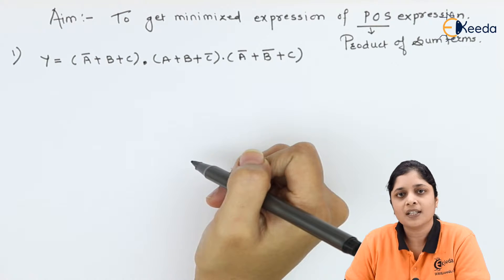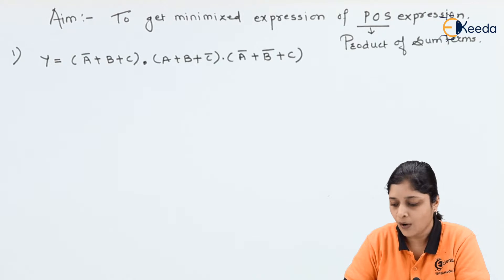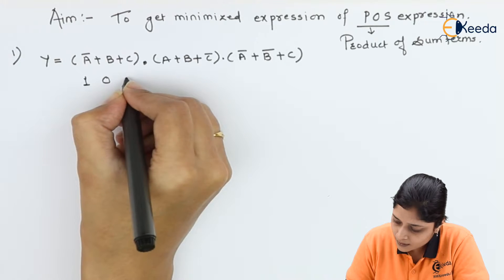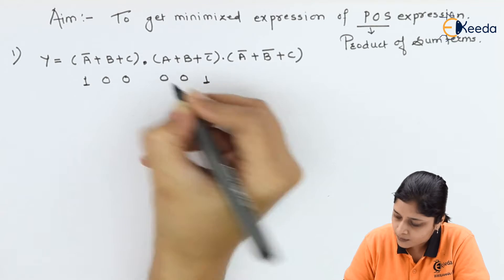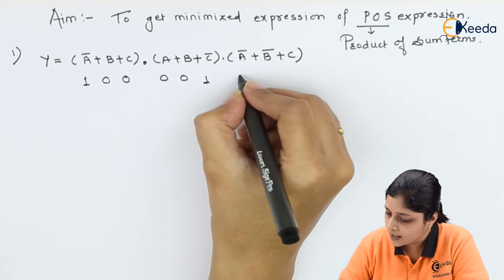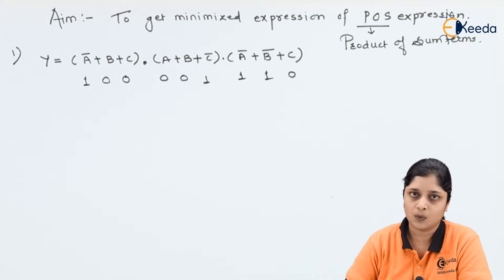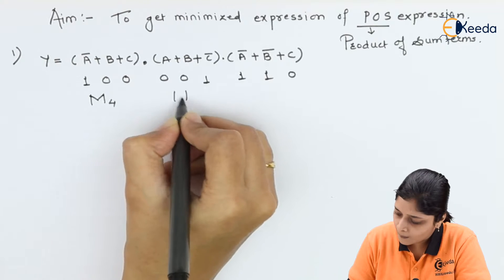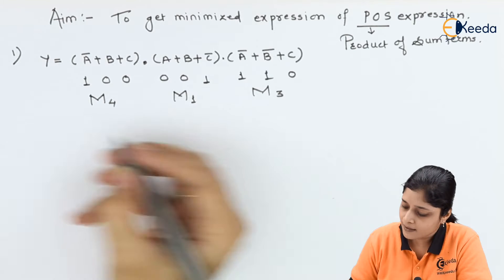First, you require the max terms. For a bar term you will write 1, and for normal terms you will write binary 0. For bar terms you write 1, and for A and B you write 0. Again, for bar terms B̅ and C, the max terms are M4 and M3.